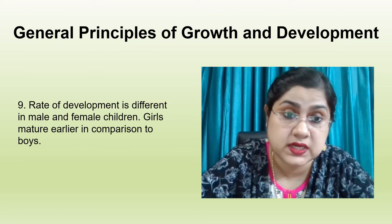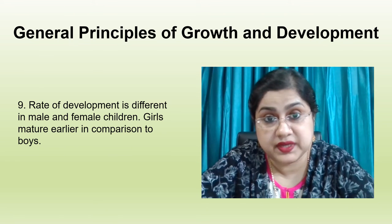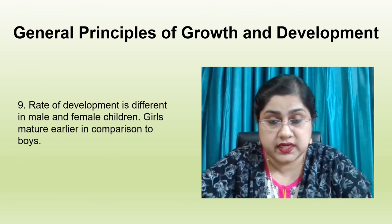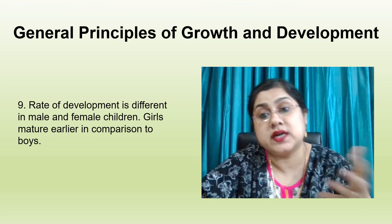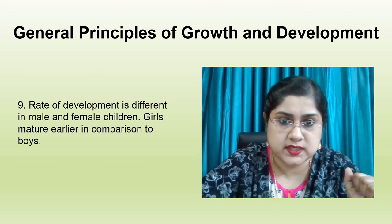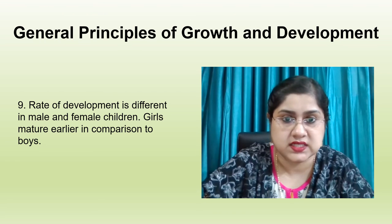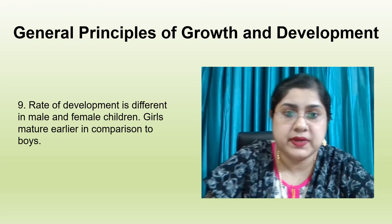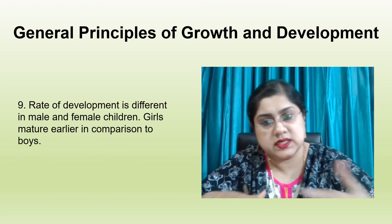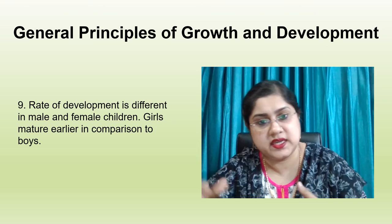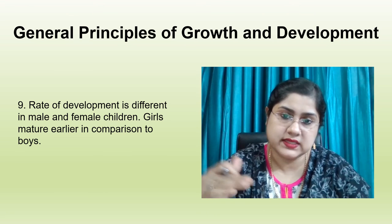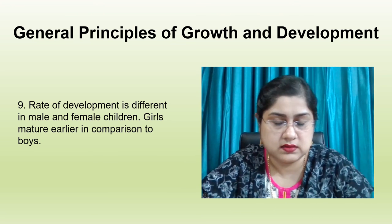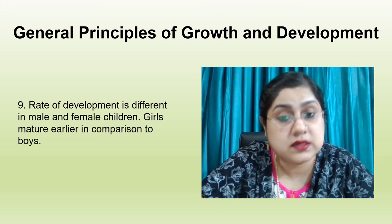The next principle states that the rate of development differs in male and female children. There is a difference in the growth rate of boys and girls. Girls mature earlier in comparison to boys — this is a well-known fact. Girls are taller and heavier than boys during pre-adolescence, but by the end of adolescence, boys surpass girls in height and weight and become heavier at times.